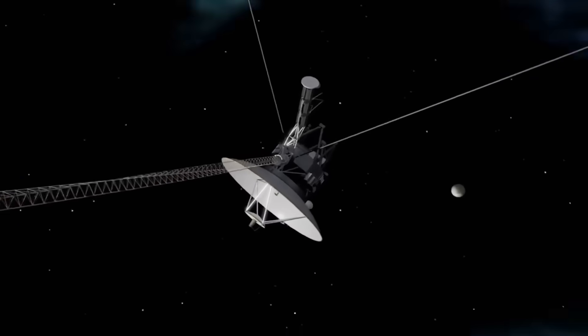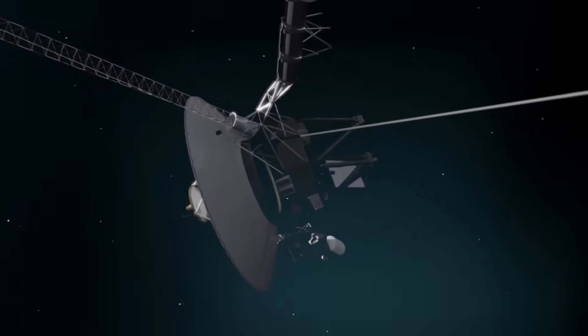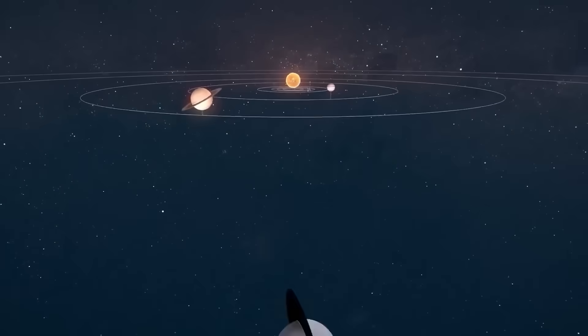Without warning, Voyager 1 shifted. Its antenna turned, slowly, deliberately, not toward Earth, but toward a part of the sky that, by all known accounts, was empty.